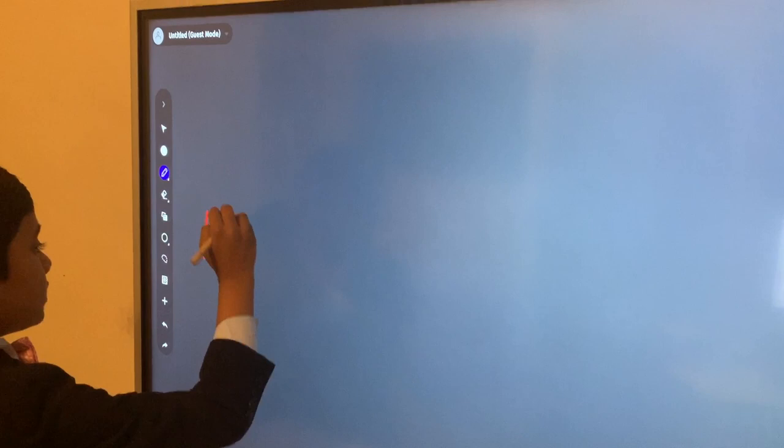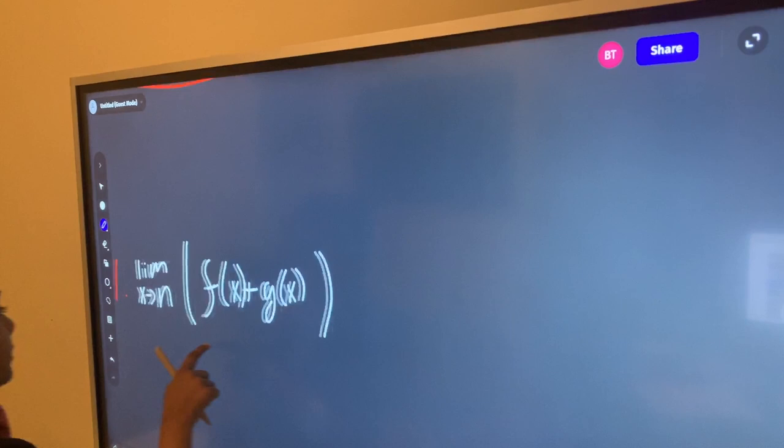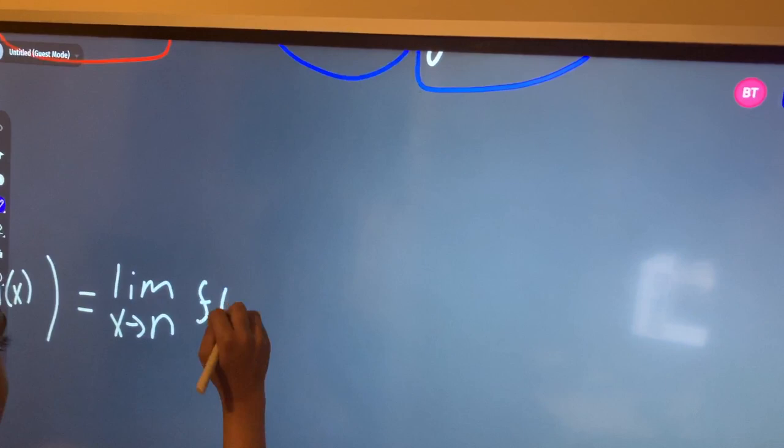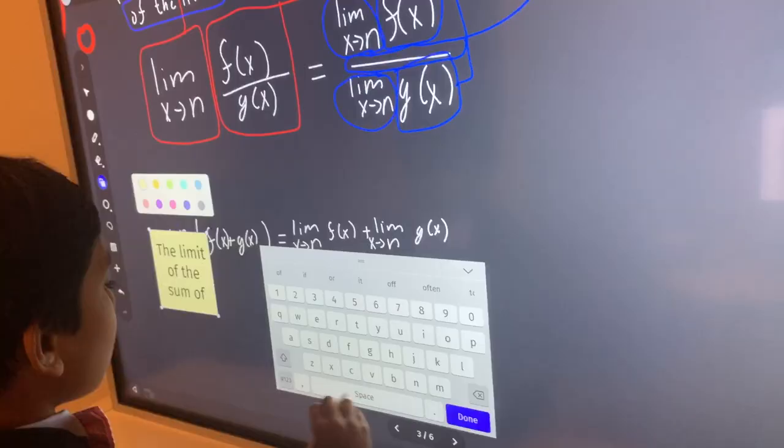Actually, the limit of the sum of two functions will always be equal to the sum of the limit of the addends, so in this case the addends are f(x) and g(x). So let's just stick a sticky note up there.